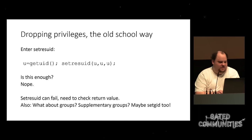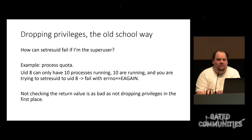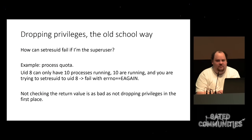If you don't check the return value, things can go badly. Also, it may not be enough to reset the user ID — there may be group IDs that are privileged too. So how can setresUID ever fail? There are system-wide resource limits for UIDs. There could be a limit of 10 processes per given UID — if that UID already has 10 processes running and root tries to drop privileges to that UID, the call will fail. If you don't check the return value, you might as well not have dropped privileges in the first place.